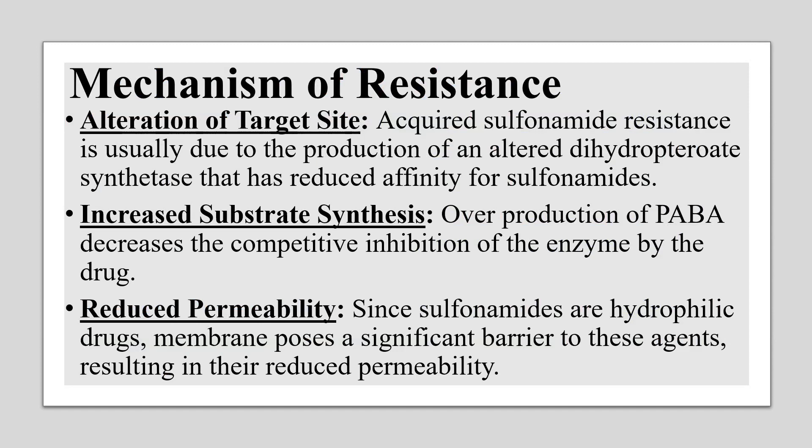The second resistance mechanism is increased substrate synthesis — overproduction of PABA. Resistant strains have acquired genes for overproduction of PABA, which decreases the competitive inhibition by the drug. Since there is a large amount of substrate, the enzyme binds with PABA and the reaction proceeds, rendering the drug less effective. The third mechanism is reduced permeability: as drug permeability through the membrane decreases, its accumulation inside the cell decreases, reducing its activity.